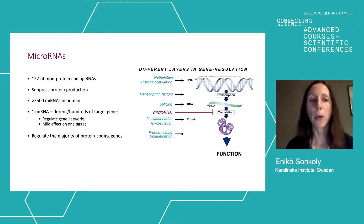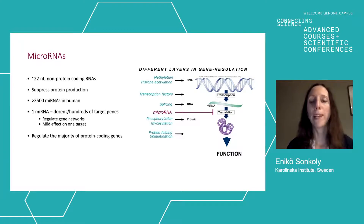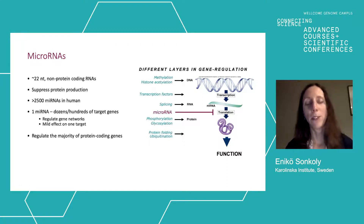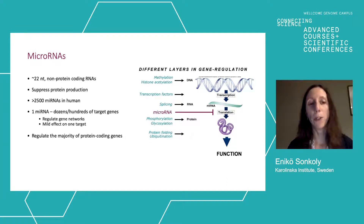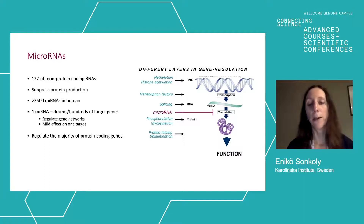MicroRNAs typically suppress protein production. We have more than 2,500 microRNAs in humans, and each microRNA regulates several genes. It would be very simple if one microRNA suppressed one protein, but that is not the case. Each microRNA regulates dozens to hundreds of target genes, and in this way they can regulate gene networks. Typically they have a quite mild effect on one target, but since they regulate several genes simultaneously, they can have a substantial effect on pathways and cellular functions.